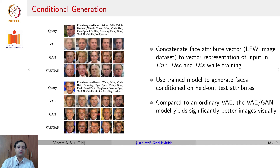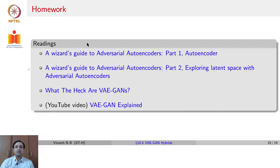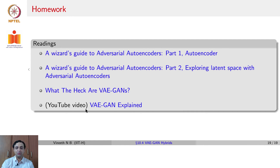Compared to a plain VAE, the VAE-GAN gives significantly better results for conditional generation experiments. Your homework for this lecture is to go through the excellent link on 'A Wizard's Guide to Adversarial Autoencoders' parts one and two, as well as a tutorial on VAE-GANs and a YouTube video on VAE-GANs if you are interested.